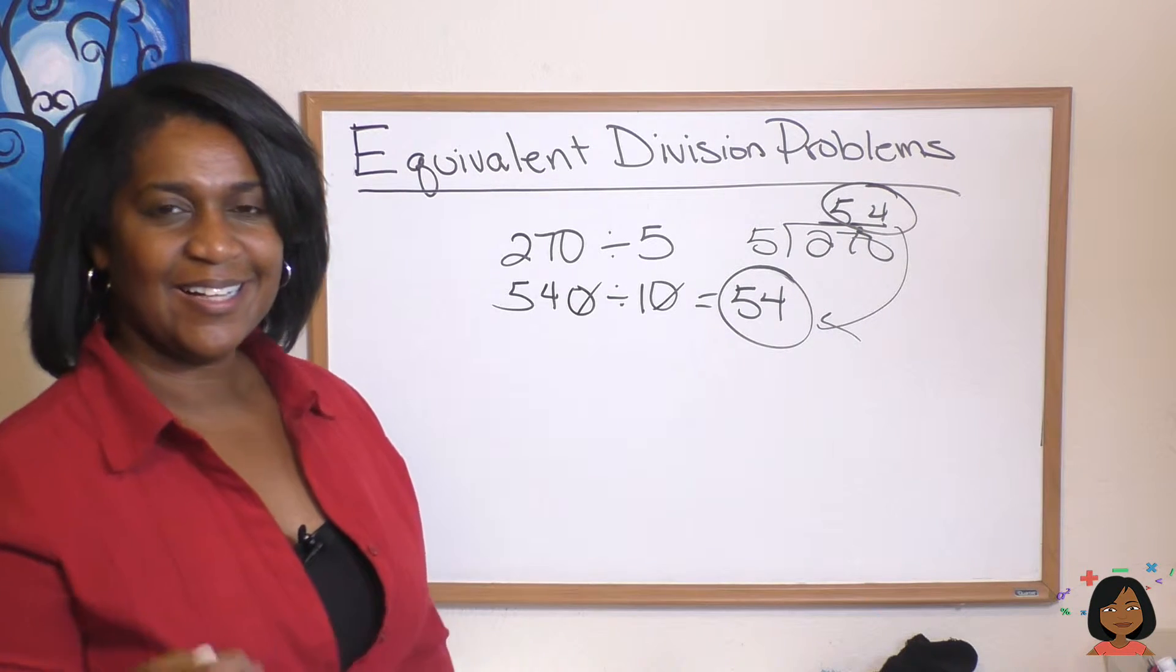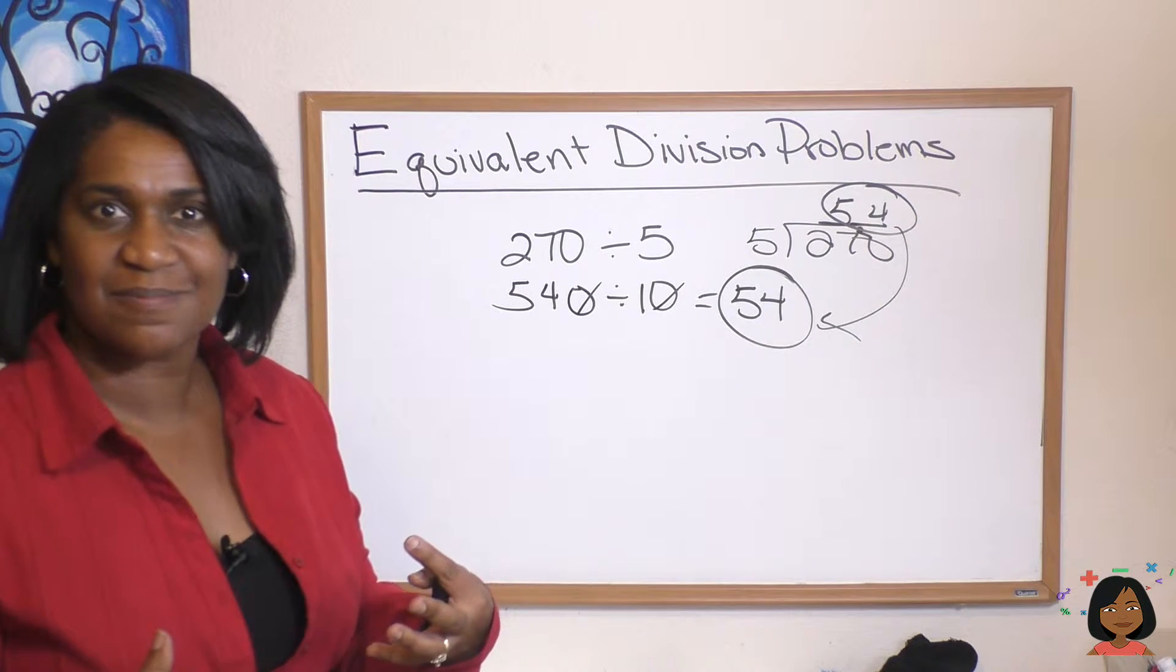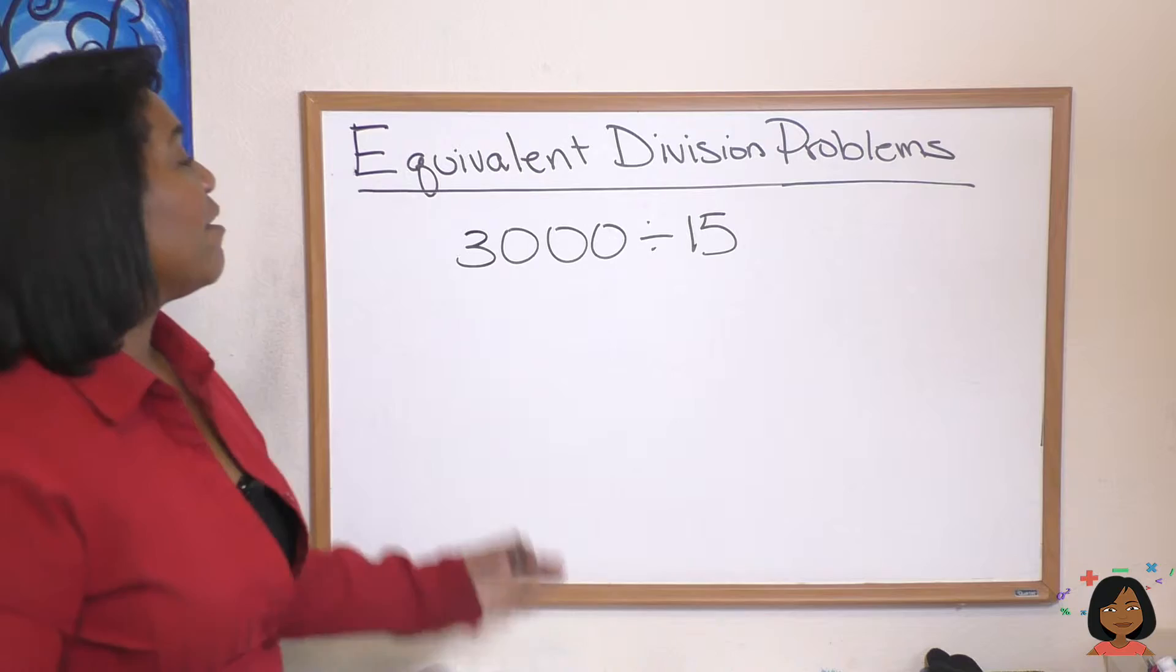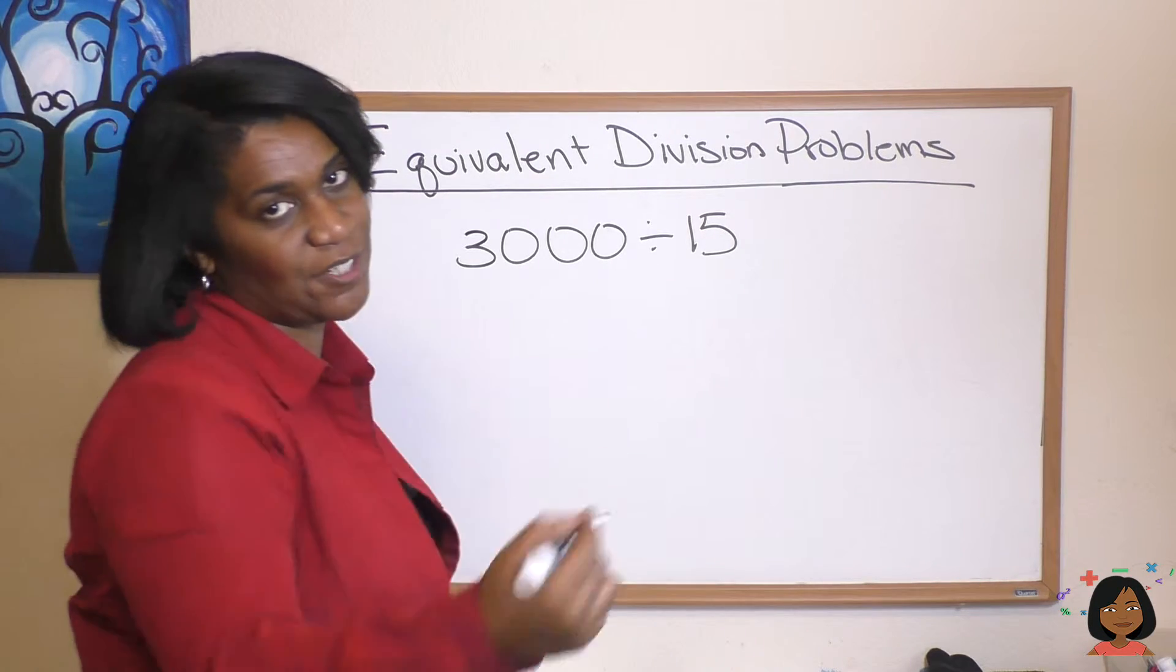Let's look at another example. Is there a way that we can make math easier on us? Take a look at this problem: 3,000 divided by 15. Now again, I could do the long division of that.